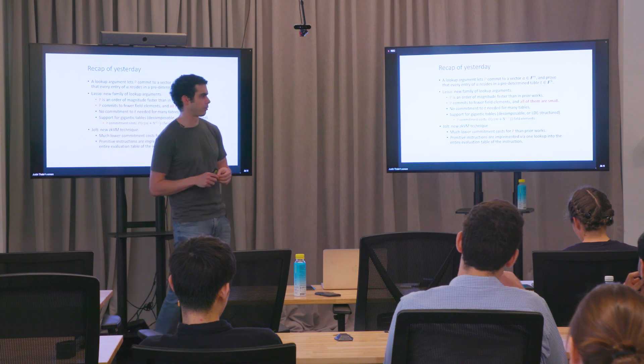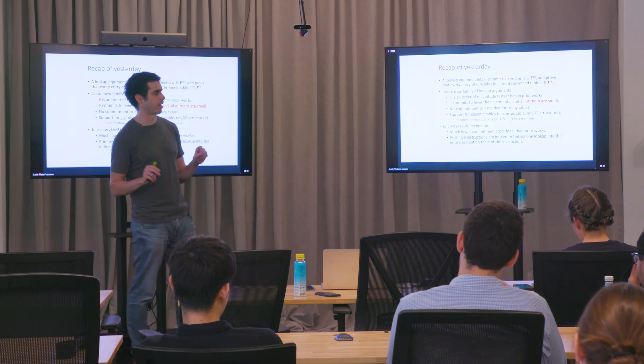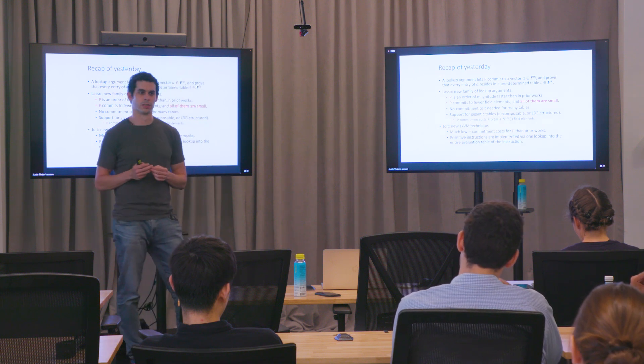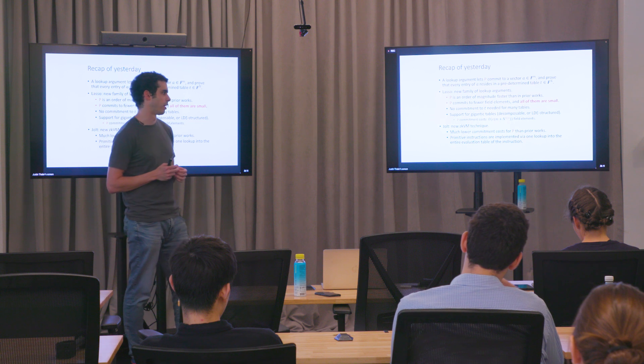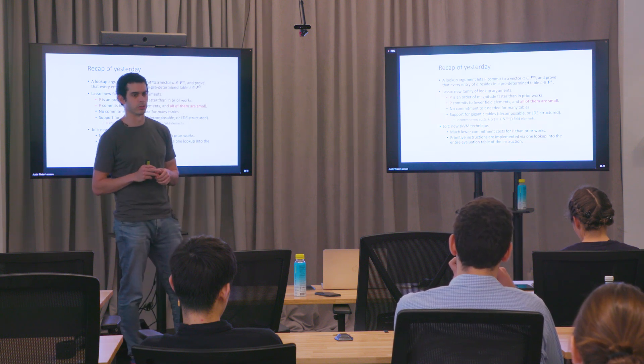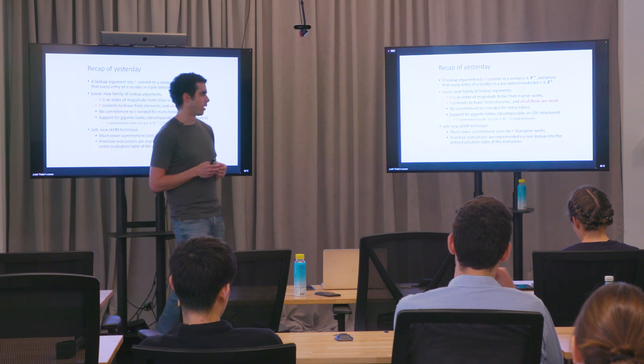And then something really unique to the Lasso family is that there's a variant called generalized Lasso, which exploits a weaker structural property in the tables. And I don't think you can achieve something like this—certainly it's not known—using univariate polynomials rather than multivariate ones.